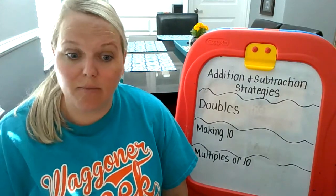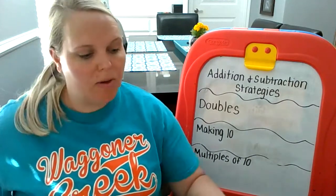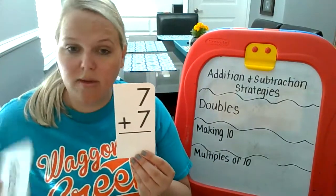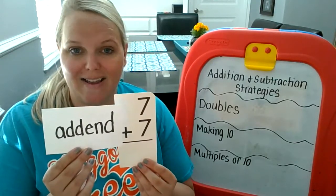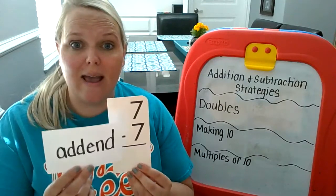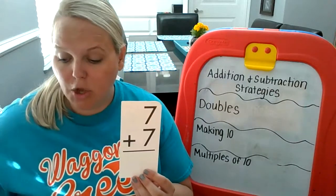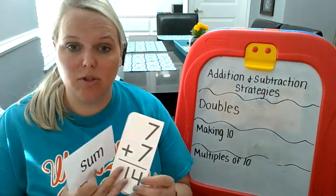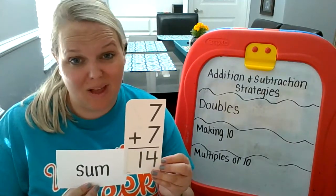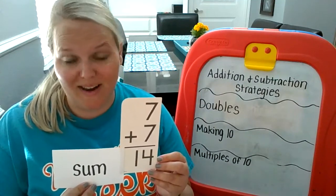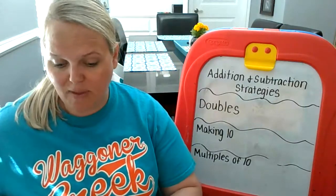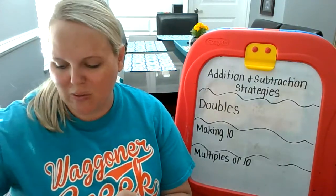Before we get started, let's go over some vocabulary words. When we're adding, we have two numbers that are being added together. Both of these numbers are called addends. So this 7 is an addend and this 7 is an addend. And when you add an addend plus an addend, you're going to get the sum. The sum is the how many in all. In first grade, we like to call this number Big Daddy because he's the big number. So when we do two addends together, we are going to get the sum.